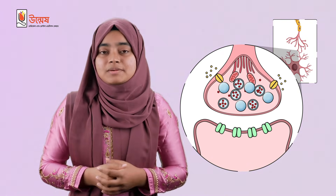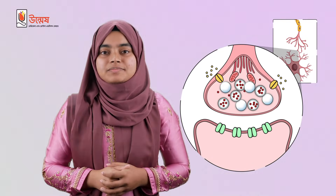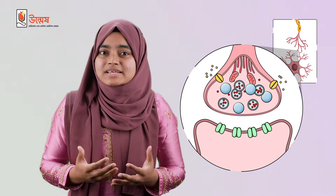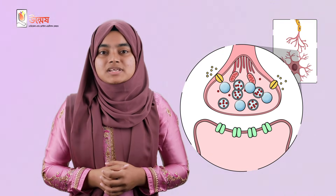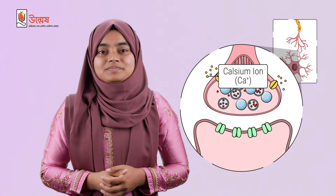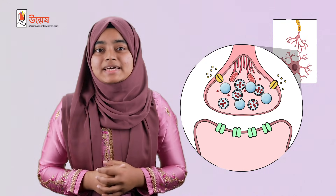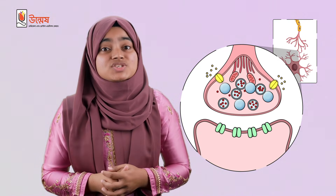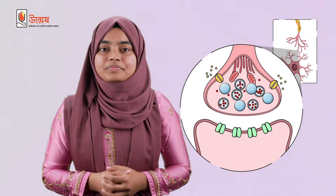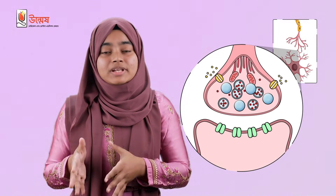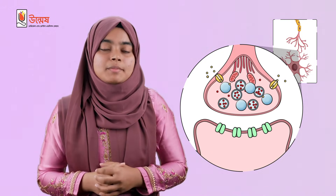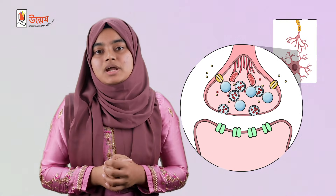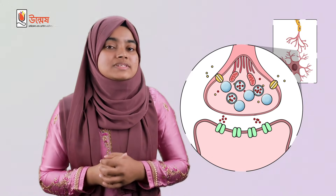Acetylcholine will be formed in the presynaptic neuron and stored in small vesicles. What we need to do is release these acetylcholine into the synaptic cleft. But these vesicles cannot move towards the cleft by themselves — they need the help of calcium ions. When impulse or action potential reaches the axon terminals of the presynaptic neuron, some transmembrane proteins present in the axolemma, which act as channels or gateways for calcium ions, open up. As a result, calcium ions from the extracellular fluid enter into the axon terminal. Then these calcium ions cause fusion of synaptic vesicles to the membrane of the axon terminal, and release of acetylcholine into the synaptic cleft occurs.